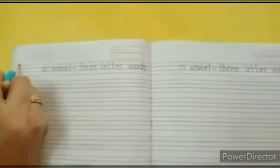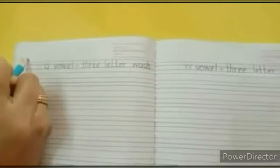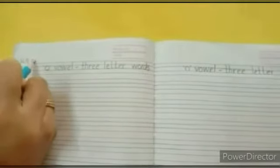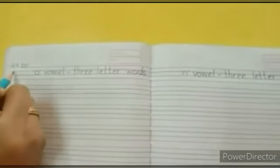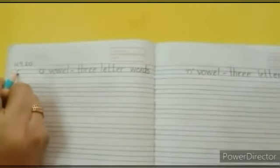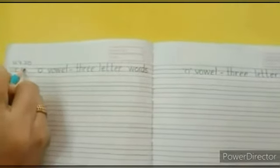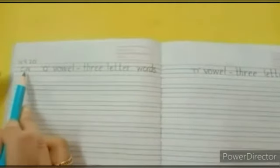After heading we will write today's date in the left corner. So today's date is 16.9.2020. Below date in between two blue lines write C.W. dot, that is class work.